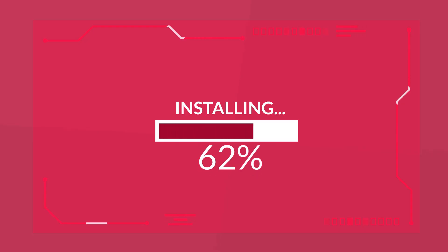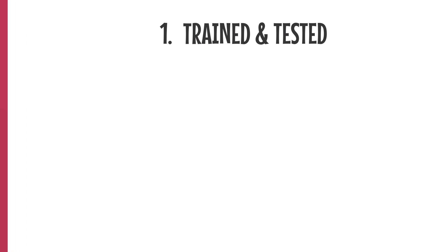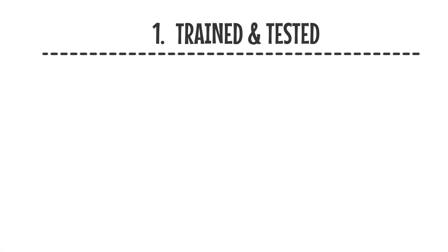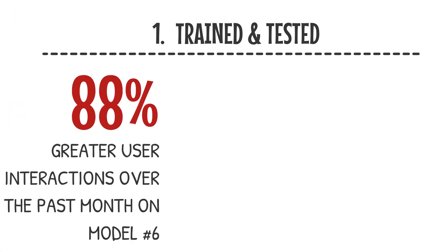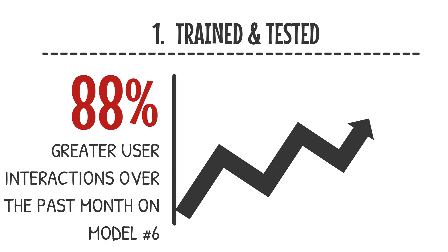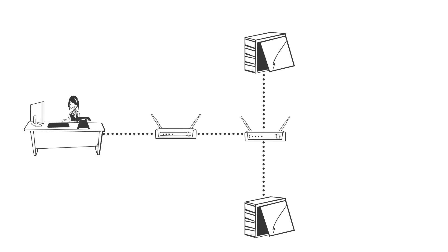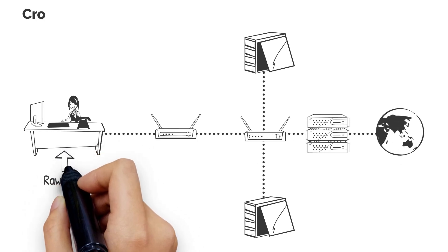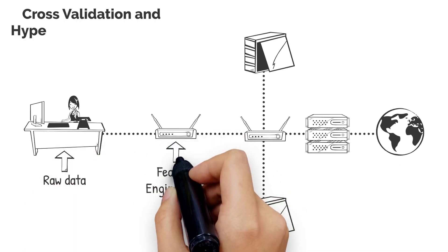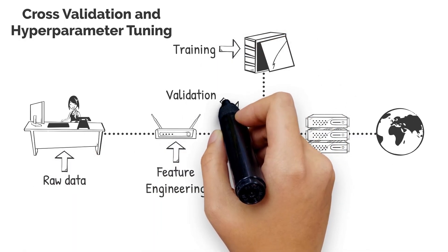Once the data is ready, a variety of models can be trained and tested to determine which model performs the best on a given dataset. The selected model can then be fine-tuned using techniques such as cross-validation and hyperparameter tuning to optimize its performance.